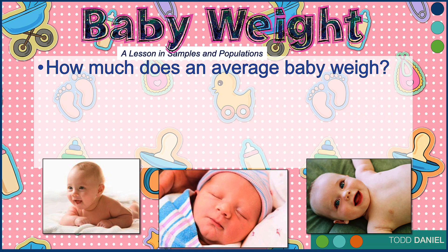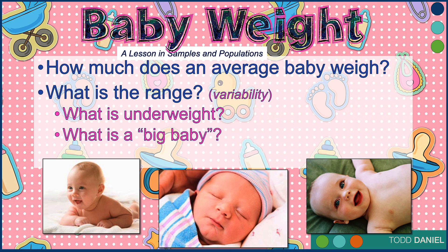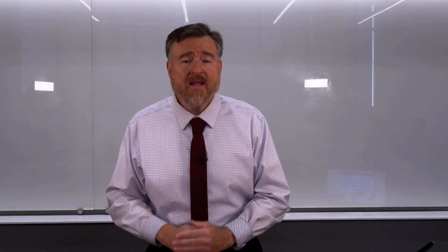Think about what you know about babies — all the babies you've ever met or known about. What would be a typical number? What would be an average for baby weight? How much variability is there around that average? What would you say would be the range? What do you think would be a very low or maybe underweight baby? What's the minimum value that would be normal for a baby to weigh? And what would be a maximum value — a baby you would say, wow that's a big baby, but still within the range of normal? To help answer this question I went to the World Health Organization and this is what I found.